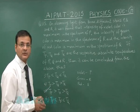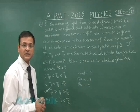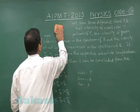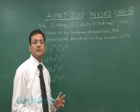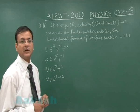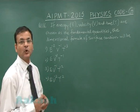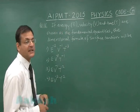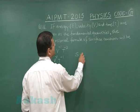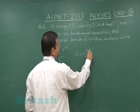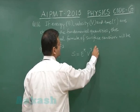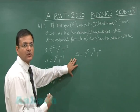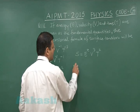Question 116 is based on dimensional analysis — finding the unknown relation between known quantities. We want how surface tension depends on energy, velocity, and time. Suppose surface tension is proportional to E^x times v^y times t^z. Surface tension is force per length, so its dimensional formula is M T^(minus 2). Energy is M L^2 T^(minus 2) raised to x.